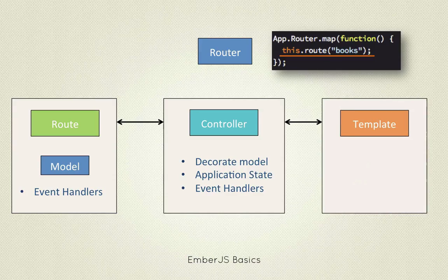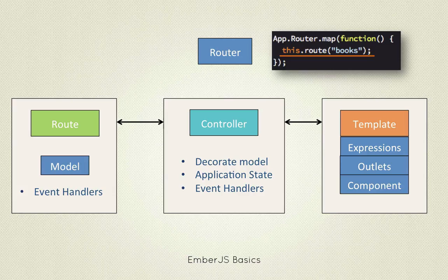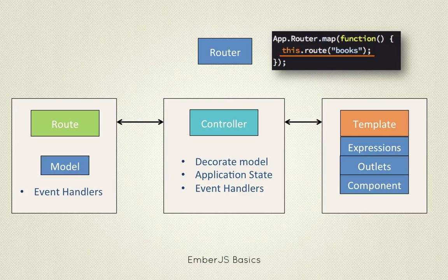Now, to templates. The main responsibility of a template is to describe the user interface of your application. Each template is backed by a model, and the template automatically updates itself if the model changes. A template is a Handlebars template, so it mainly consists of HTML, but it also contains expressions, outlets, and components. Expressions take information from the model and place it into HTML, and provide helpers for iterating through collections and conditions. Outlets are placeholders for other templates such as sub-templates. Components are custom HTML templates which can be reused in several templates or even between applications.